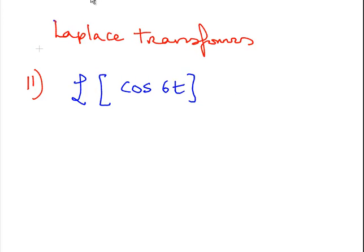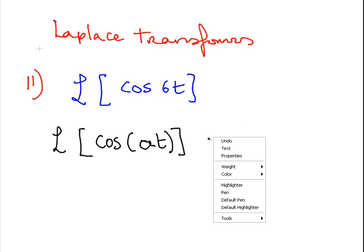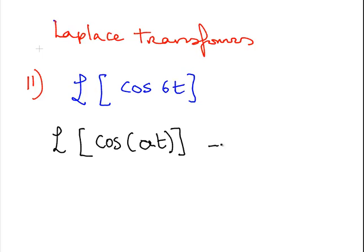Cos of 6t. So what we are going to do is go down a little bit further. We are going to go down to about the ninth or tenth. And what we are told here is cos of at. The Laplace transform of cos of at is s over s squared plus a squared.